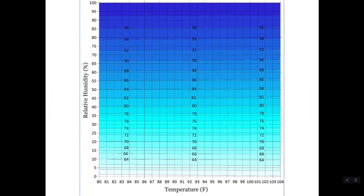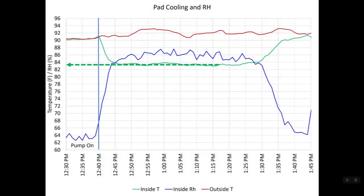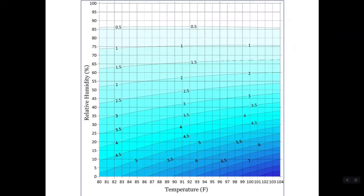What about the humidity? At 92 degrees, drawing a line up and over from 62 percent, we see the incoming humidity should be around 88 percent. In fact, the humidity was pretty close to that — around 86 percent — which is pretty good considering that the accuracy of most humidity sensors is plus or minus 2 or 3 percent.